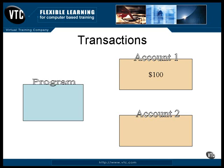Doing it in a different order can be just as bad. Before you remove the money from one account, you simply add it to the other. But before you can remove it from the first account, the system goes down. When you bring the system up again, you have twice as much money recorded as you had originally.